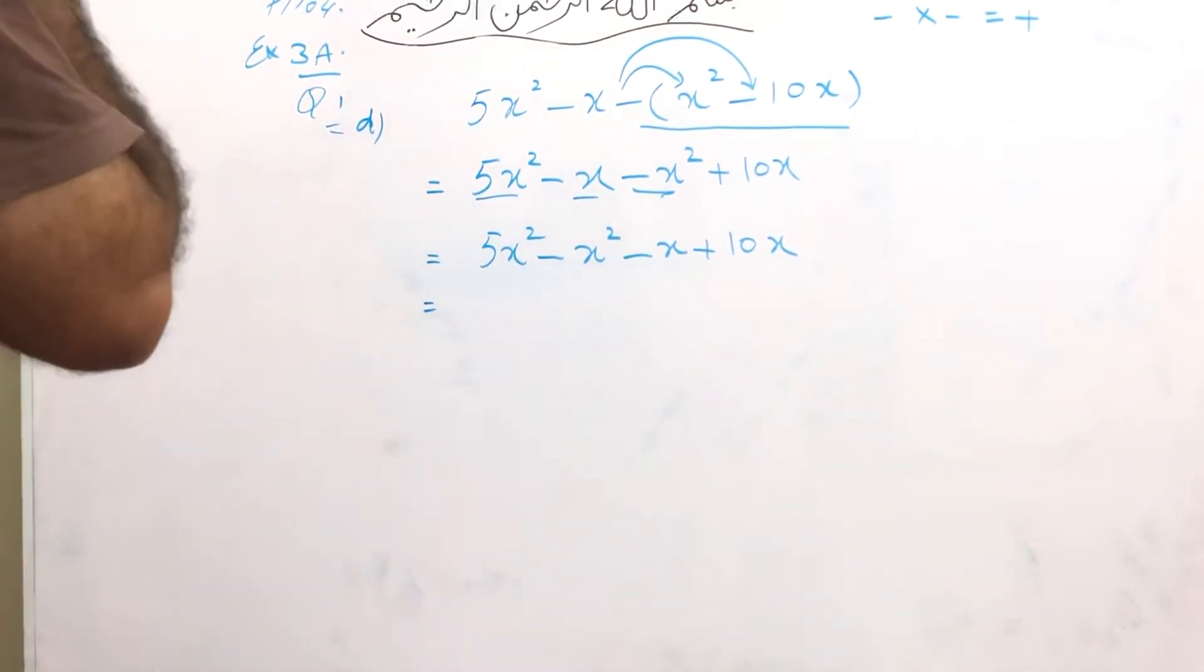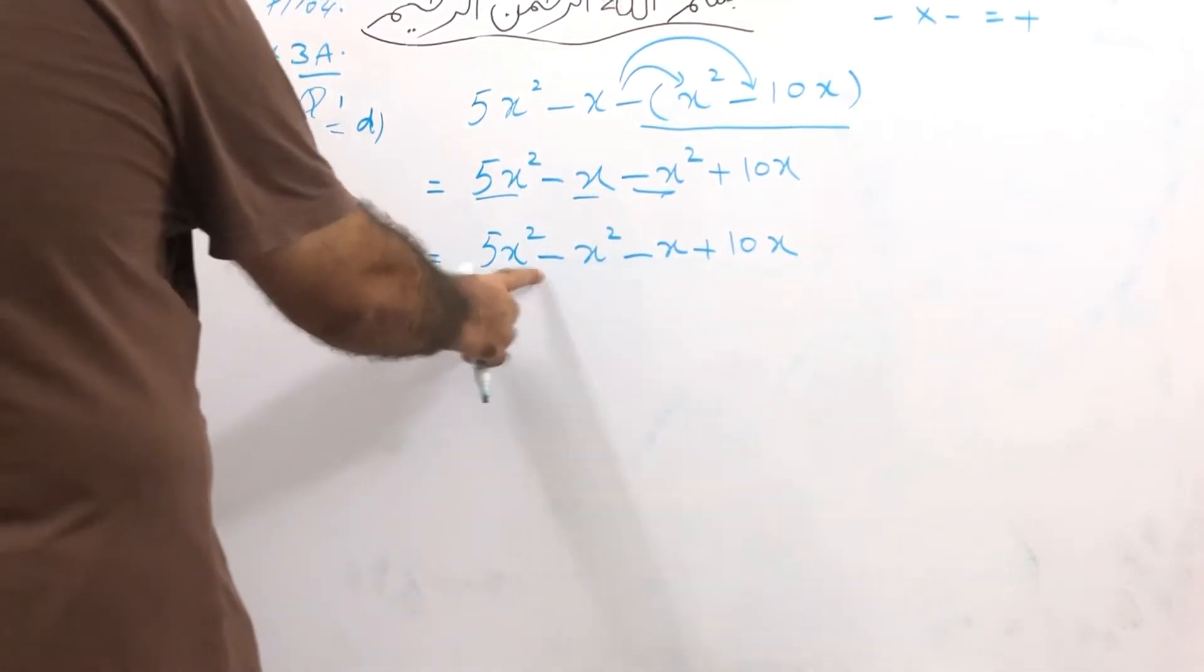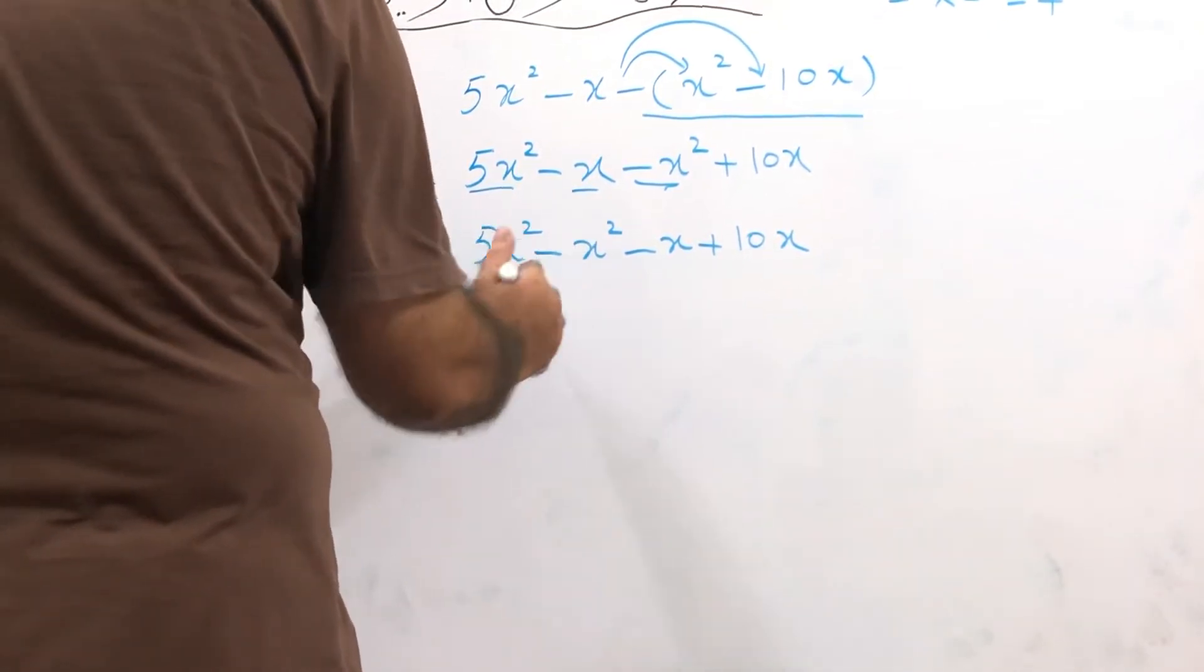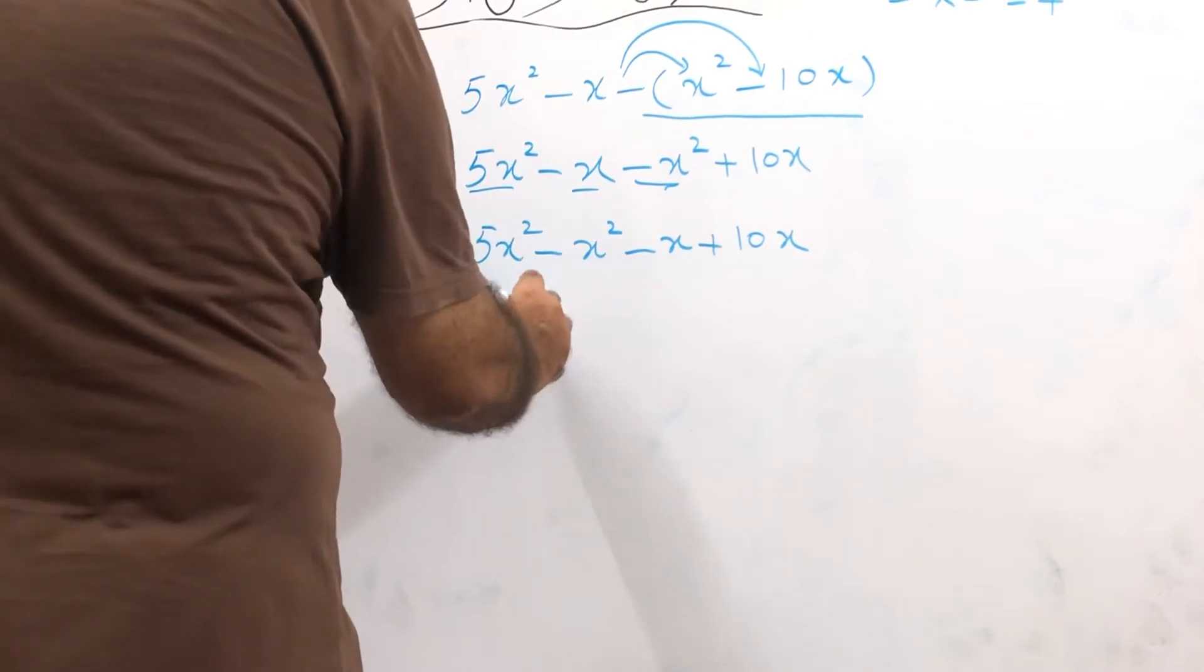This is 5x² and this is minus x². It means there is 1 here as coefficient. 5 minus 1 is 4, so 4x².